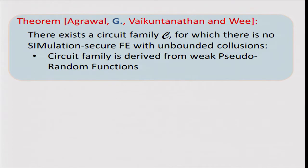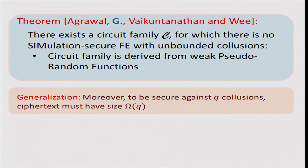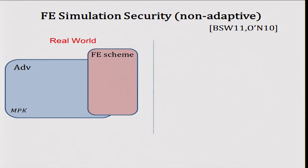More formally, we say that there exists a circuit family C for which there is no simulation-secure functional encryption with unbounded collusions. The circuit family is derived from this weak pseudorandom function class — if you're not familiar with what weak means, you can think of regular pseudorandom functions. As a generalization, to be secure against Q collusions your ciphertext must grow with the bound Q. Now let me get into the more technical part: I'm going to talk about the simulation-based definition and focus on the non-adaptive setting.